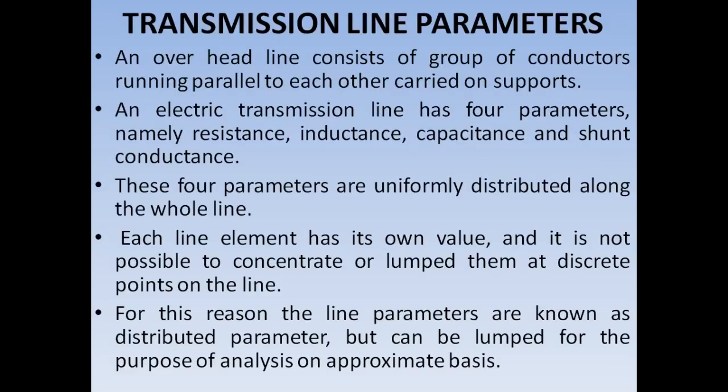All of you are quite familiar with overhead transmission lines — you can see them everywhere on the roadsides. They are actually a group of conductors running parallel to each other, carried on supports, which are the poles and posts you see frequently. Basically, this overhead transmission line consists of 4 parameters: resistance, inductance, capacitance, and shunt conductance.